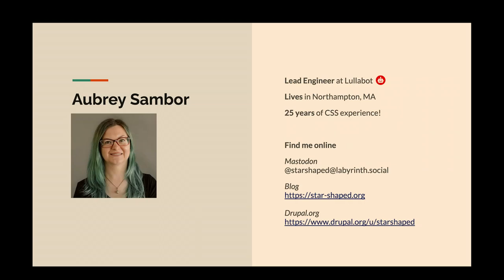To find me online, I am no longer on what was formerly known as Twitter. I am on Mastodon as starshaped at labyrinth.social. I have a blog at starshaped.org — I've been writing a lot about albums I didn't listen to in the early 2000s and giving them reviews. I am on Drupal.org and GitHub, also as starshaped. I'm pretty much starshaped everywhere if you want to find me.